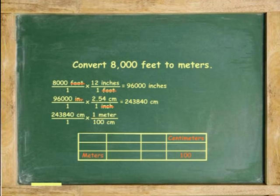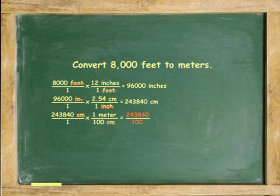243,840 centimeters over 1 times 1 meter per 100 centimeters. Cancel centimeters. Multiply and divide 243,840 by 100. The answer is 2,438.4 meters.